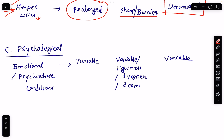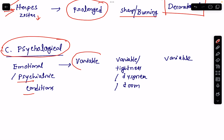Lastly, psychological causes of chest pain — there may be emotional causes or psychiatric conditions leading to chest pain. The duration may be variable — maybe of short duration, maybe of long duration — and the quality is also variable.